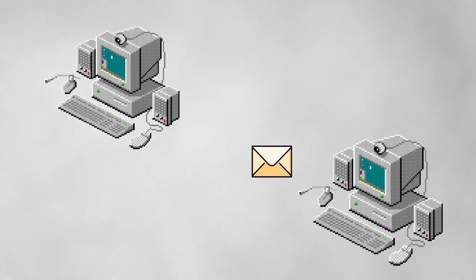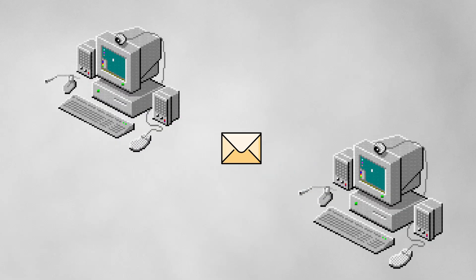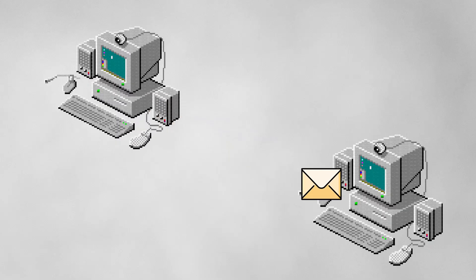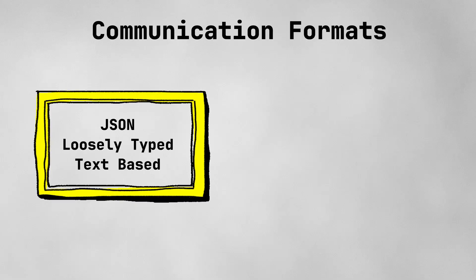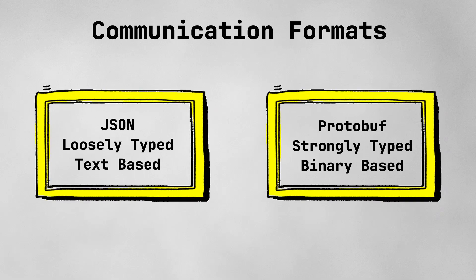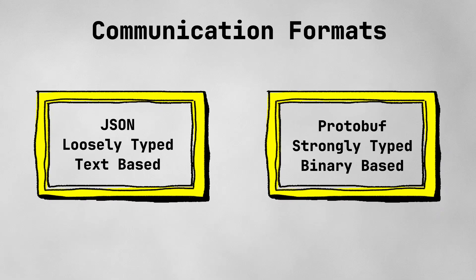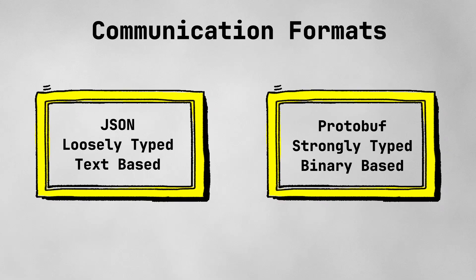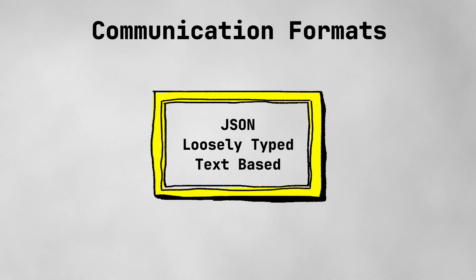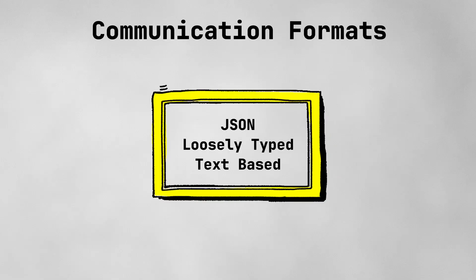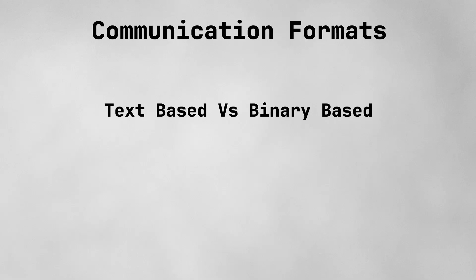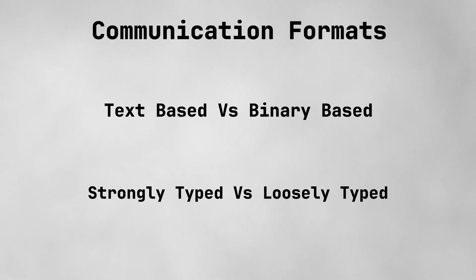A very core thing that we haven't covered related to all of these services is how they actually communicate with each other. When it comes to communication formats, there are a bunch, but we're only going to cover two main ones. The first is JSON, which is a loosely typed text based format, and the second is a strongly typed binary format called protobuf. There are two main components to communication formats: text based versus binary based, and strongly typed versus loosely typed.